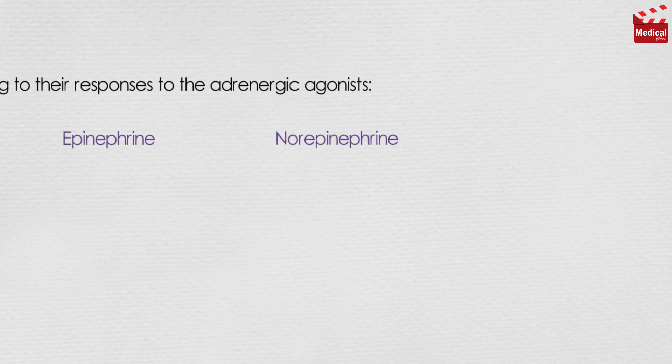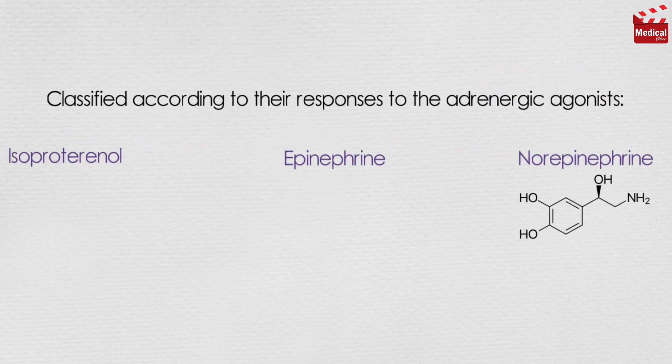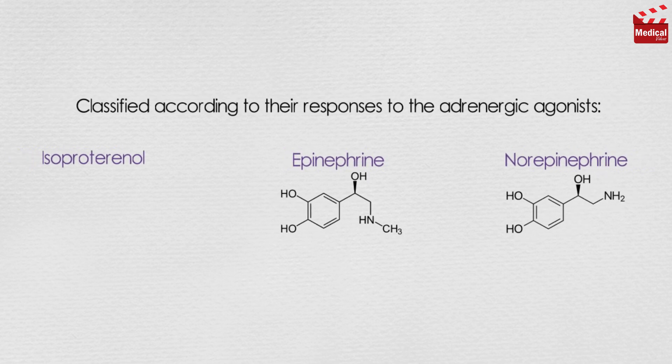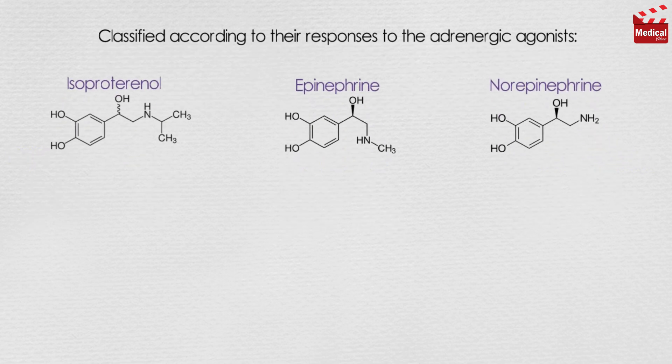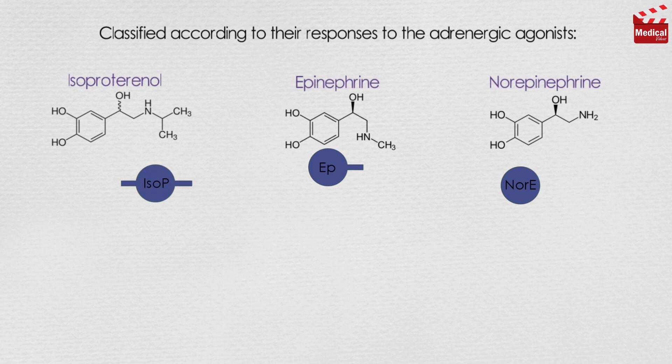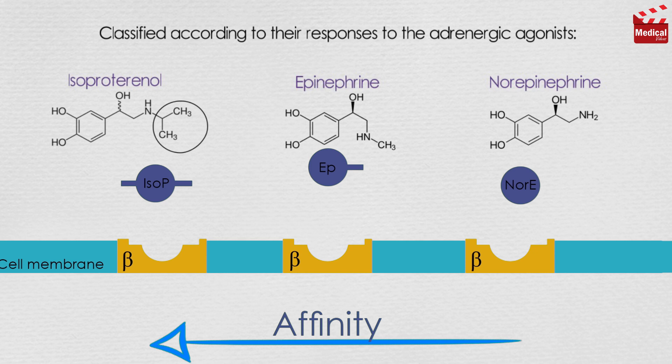To simplify this, let's check the chemical structures of these three agents and make a simplified representation of them. The affinity for beta receptors increases as the group on the nitrogen gets larger. So we can conclude that beta receptors are characterized by a strong response to isoproterenol, with less sensitivity to epinephrine and lesser sensitivity to norepinephrine.